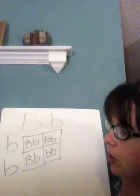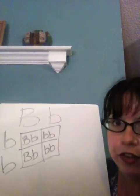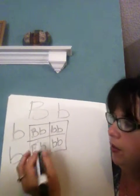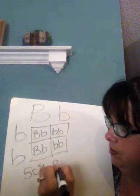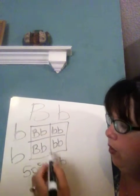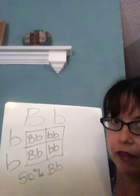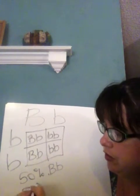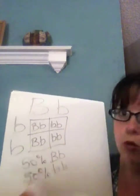So the possible offspring is 50-50. It would be 50% brown-eyed possibility. And then, or big B, little b because we're talking about phenotype here. And then little b, little b would be also 50%. You can also say that it's a one-to-one relationship.